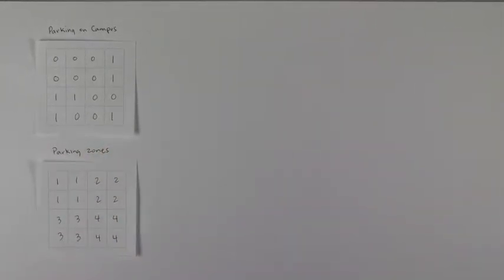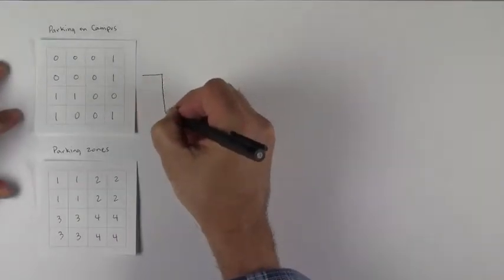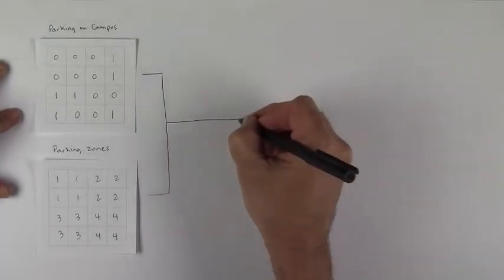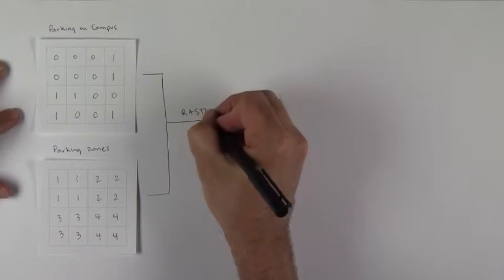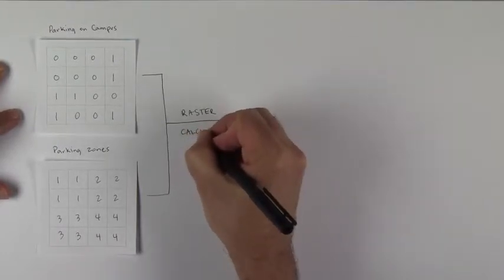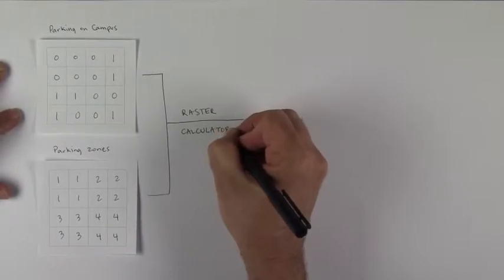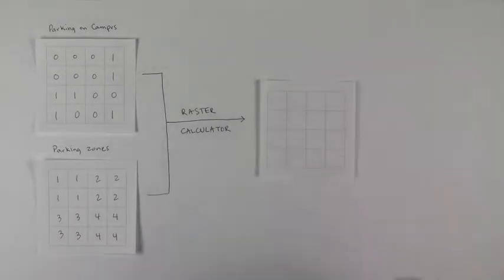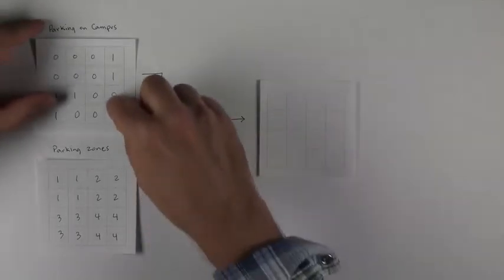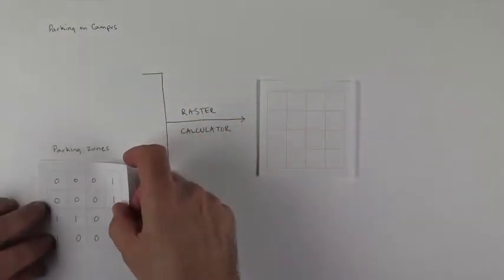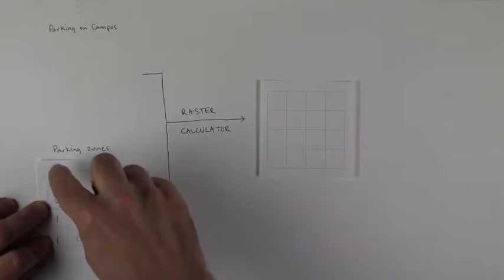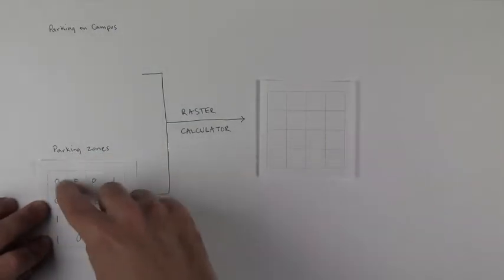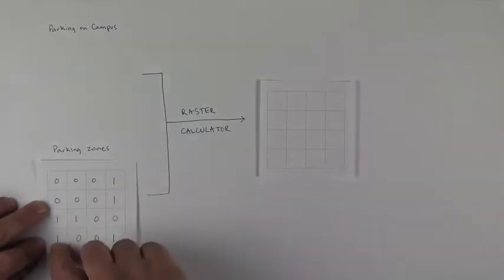And so then what you did was you took these two and you used raster calculator to kick out this new one. And the idea is that because the rasters are the exact same size, they have the exact same number of rows and columns, and the cell size is the same, and this corner point is the same in both rasters.